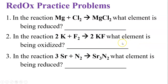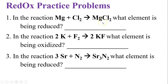Whatever becomes positively charged has lost electrons and is oxidized; whatever is negatively charged has gained electrons and is reduced. In the reaction magnesium plus chlorine yields magnesium chloride — chlorine is the negative ion, so chlorine is being reduced.